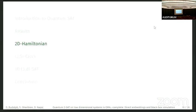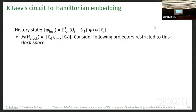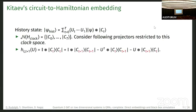Now let me go over the 2D Hamiltonian construction used for QMA-completeness. To recap Kitaev's basic circuit Hamiltonian embedding: the goal is to construct a Hamiltonian whose ground state is the history state. This is a superposition over all time steps, applying gates one by one to some input state psi. These time steps are enforced by H_clock, which forces the space to be in the clock space. We then have transition terms: from t to t+1 apply U, and from t+1 to t apply U-dagger, arranged to form projectors.